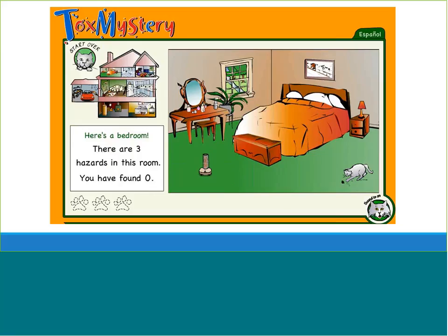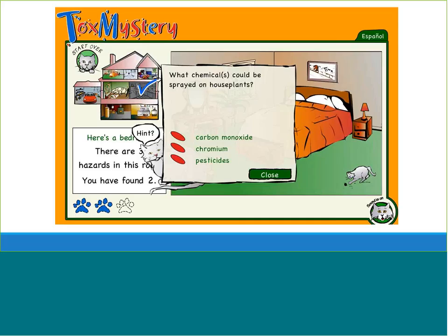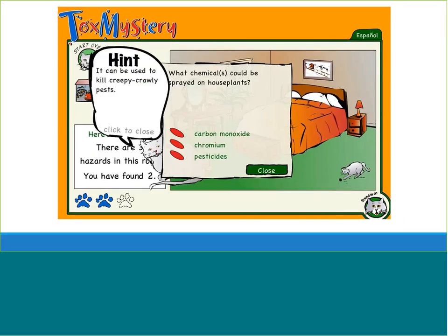Here's an example of one of the bedrooms. There are three hazards in this room, and one is related to the spray bottle next to the plant. If I click on the spray bottle, a question pops up. All the questions are multiple choice. You can see that Toxie is there to offer a hint if I don't know the answer. If I click on the word hint, another pop-up opens with a hint from Toxie, which helps children figure out that the toxic chemical related to the spray bottle near the plant is pesticides.